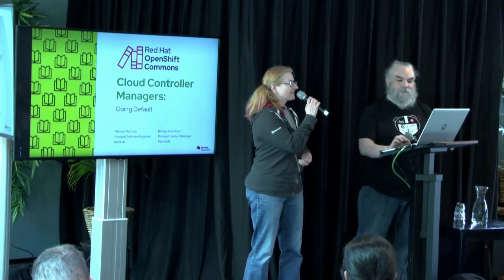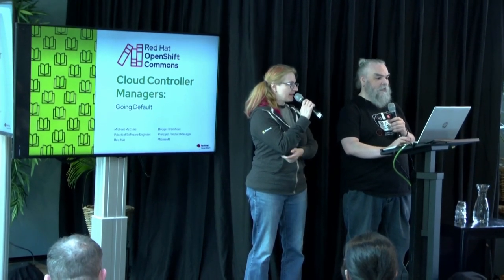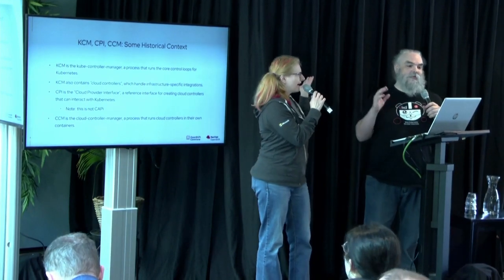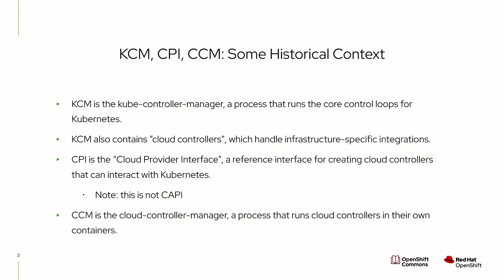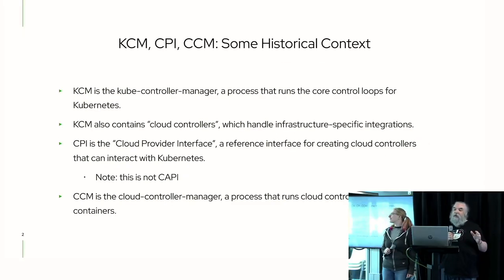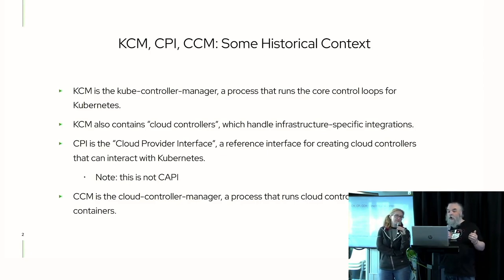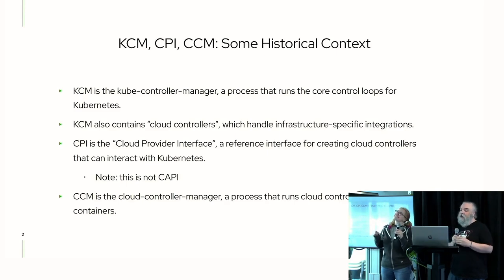There's a big change coming to the Kubernetes community around cloud controller managers, but before we start talking about that, let's set a little bit of context. We have a lot of acronyms here: KCM, CPI, CCM. The KCM is the kube controller manager, a process that runs in every Kubernetes cloud that runs the core control loops in Kubernetes, such as namespaces and replication controllers. But it also contains loops known as cloud controllers, which handle interactions with the underlying infrastructure, such as reading metadata services or managing resources like load balancers.